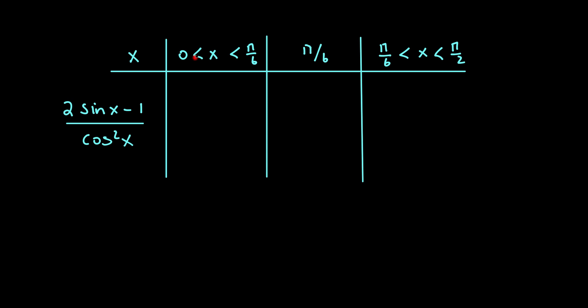So if x was between 0 and π/6 we would get a negative. And when x equals π/6, of course as a stationary point it will be 0. And when it's between π/6 and π/2, the gradient function will be positive.